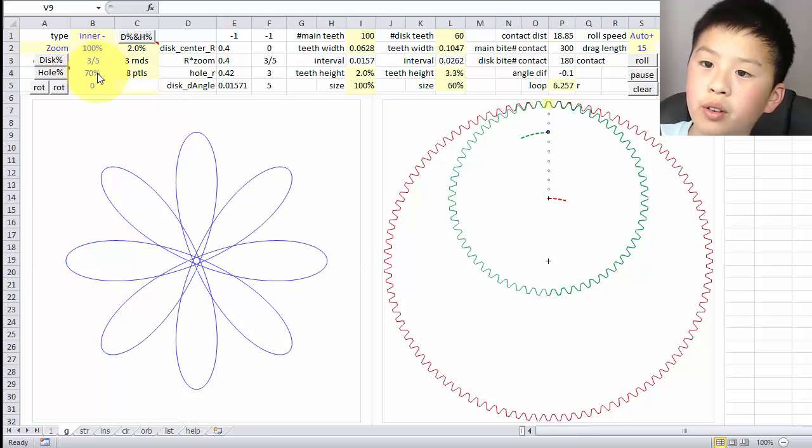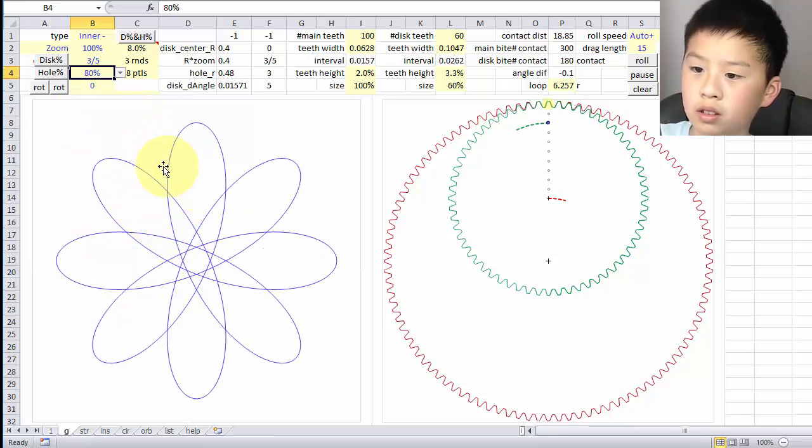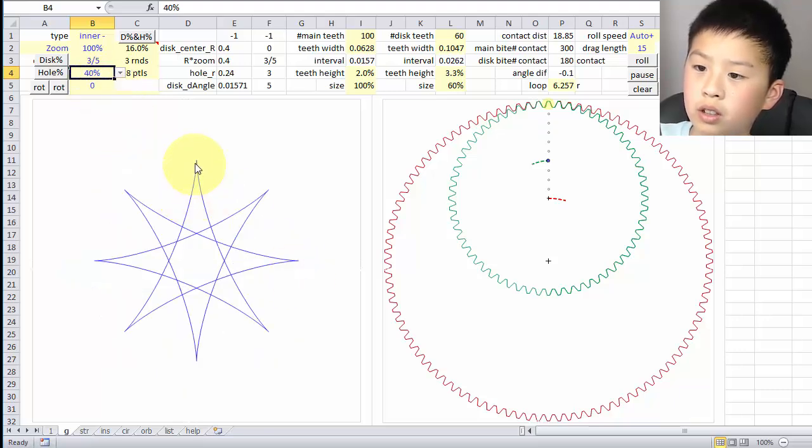So first I'm going to start off with the hole. Maybe I could change it, make it higher. 80. You can see it's different now, and this has moved up. Or I could make it lower. 40. Now it looks different. It looks spiky, and it has moved from around here down to here.